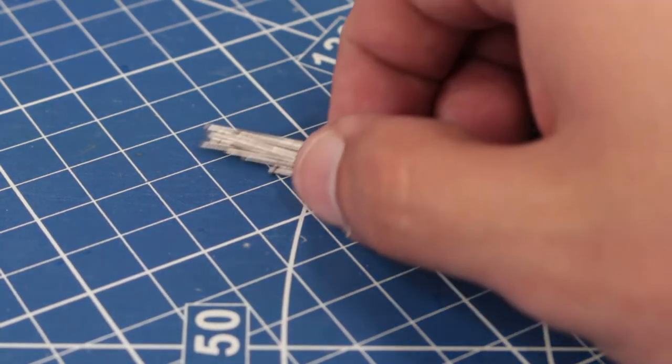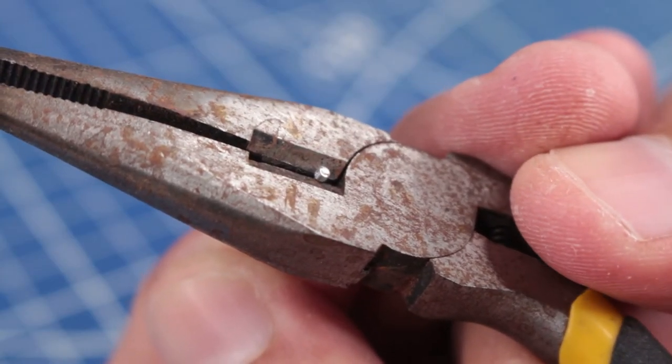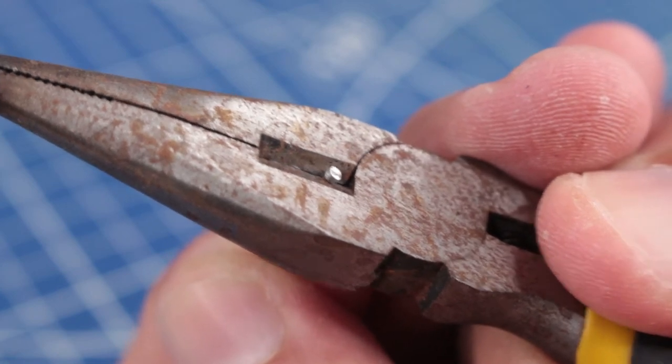I'll use these pins to make the miniature screws. So I cut the head of 24 pins using these rusty pliers.